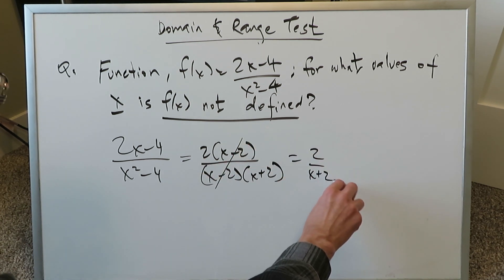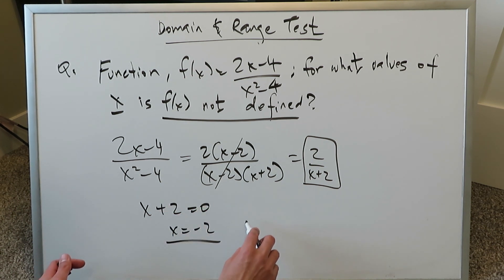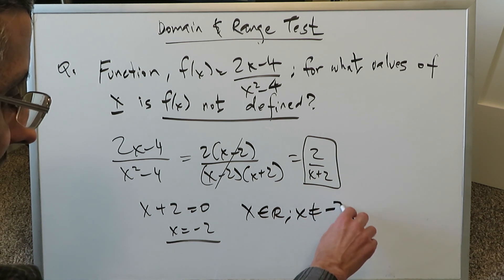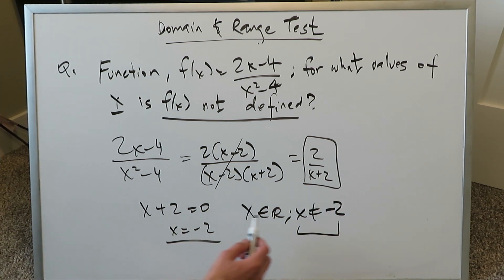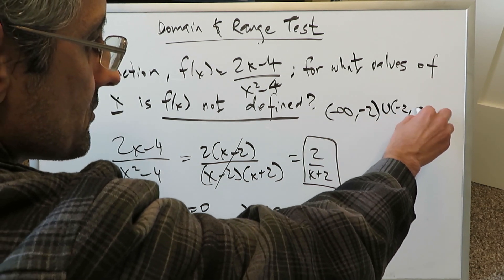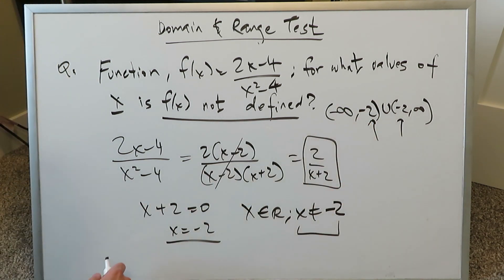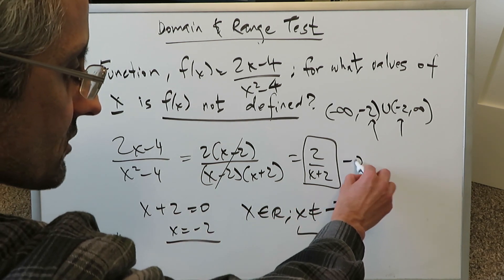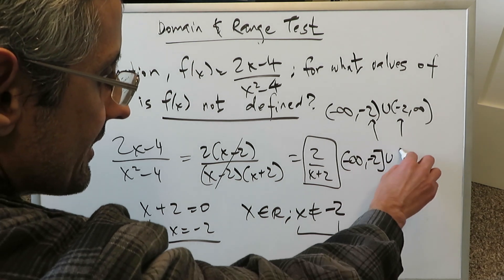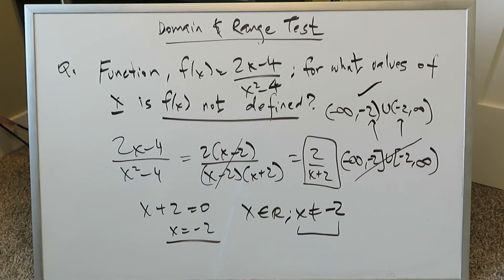After simplification you have 2 over x plus 2. To determine what function values are not defined, you zero out that denominator and solve for x, giving x equals minus 2. This represents a vertical asymptote and clues you into your domain: x is an element of all real numbers but x cannot equal minus 2. In interval notation, that's minus infinity up to minus 2, then minus 2 up to infinity — with circular parentheses indicating minus 2 is excluded. Contrast this with square brackets, where minus 2 would be included in the domain, but that is not the right answer.